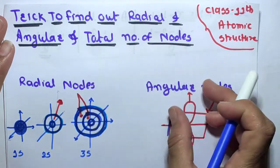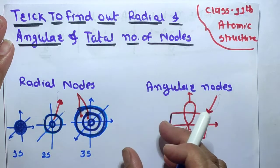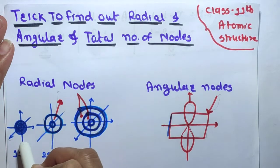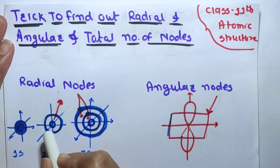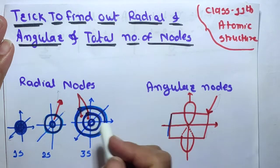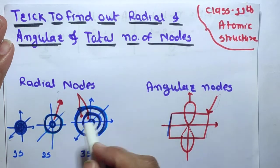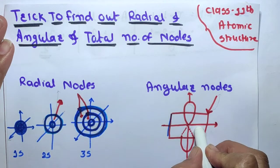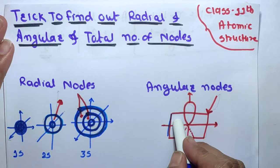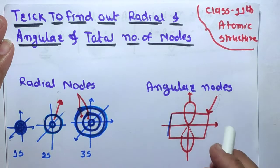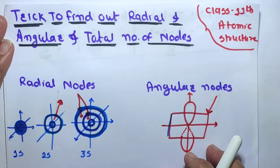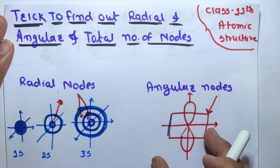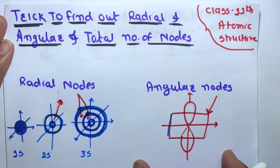First of all, what is meant by radial and angular nodes, and the difference between them. Radial nodes is the spherical surface within an orbital on which the probability of finding an electron is 0. This region is called radial nodes. Angular nodes means a plane passing through the nucleus on which the probability of finding electrons is 0 — these are flat planes — and is called angular nodes.